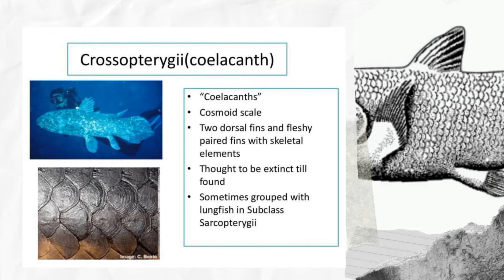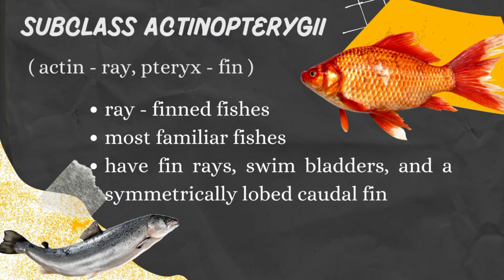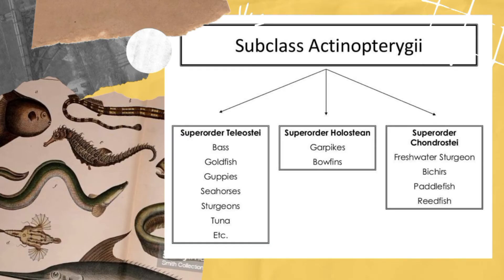Also within the Sarcopterygii are the coelacanths, now represented by two species in a single genus — Latimeria chalumnae and L. menadoensis. Coelacanths have cosmoid scales, two dorsal fins, and fleshy paired fins with skeletal elements. They are thought to be a living relic recently found to still be alive underwater. The ray-finned fishes, or Actinopterygians, have several notable physical characteristics. Ancestral actinopterygians generally had heavy and complex scales known as ganoid scales, while today's surviving ray-finned fishes generally have more flexible, reduced-weight scales known as leptoid scales.